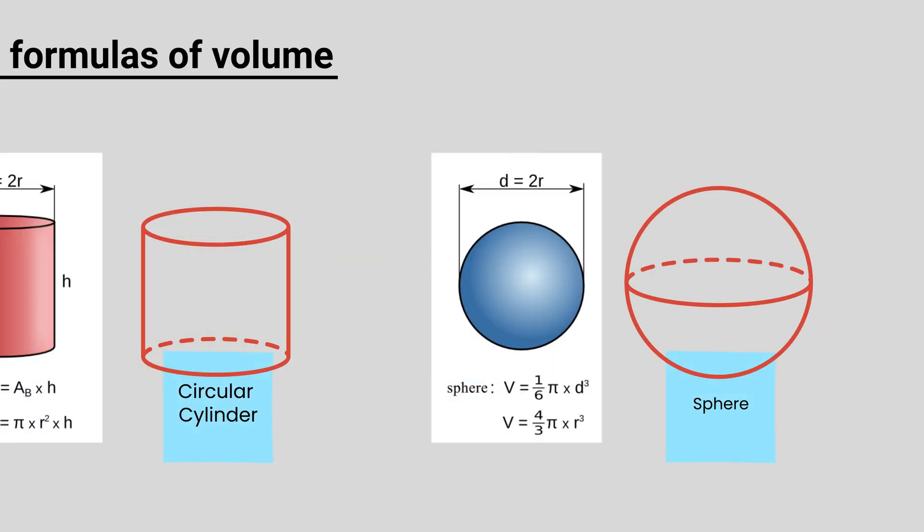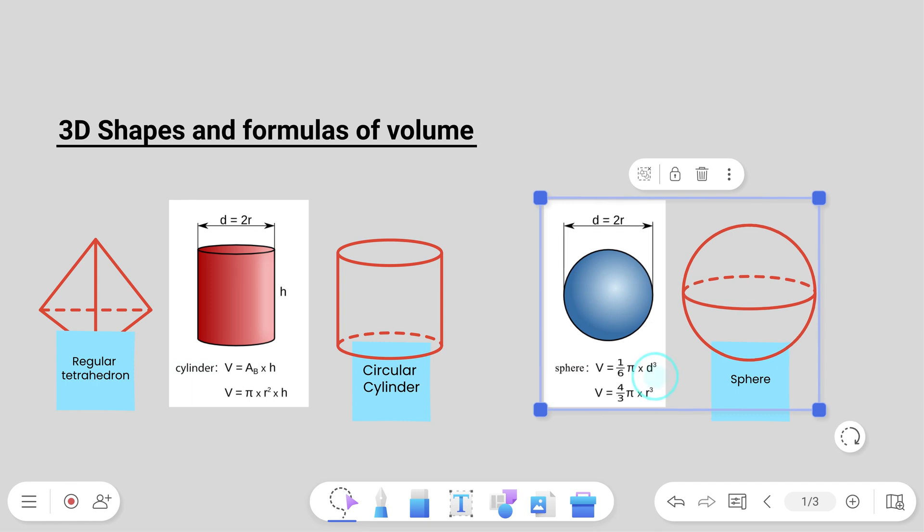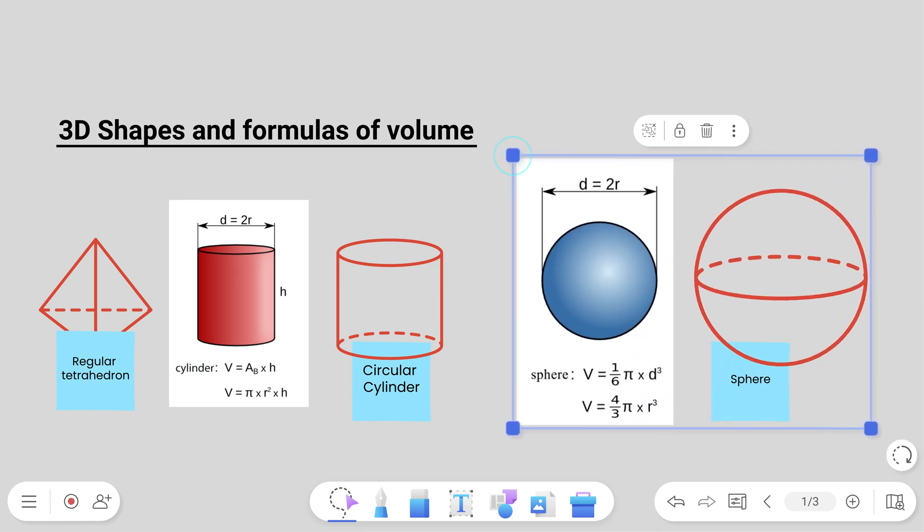You can group several objects together. Select two or more items, then tap the group button on the menu. This makes it easier to modify and move content around the board. Ungroup objects by tapping the button again.